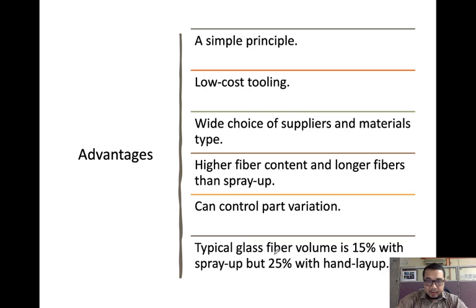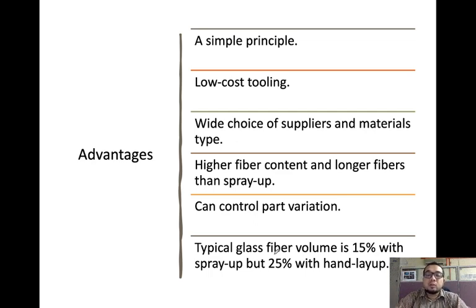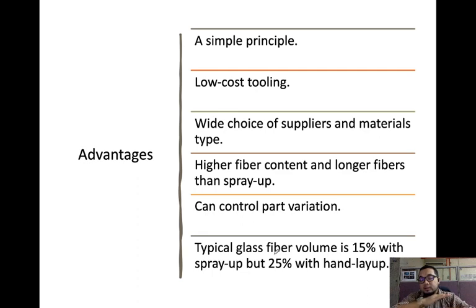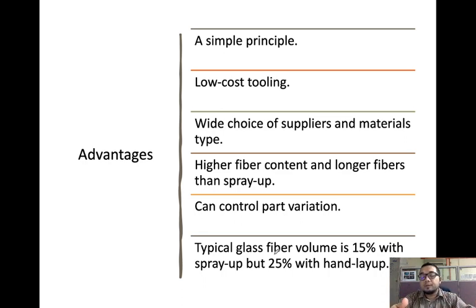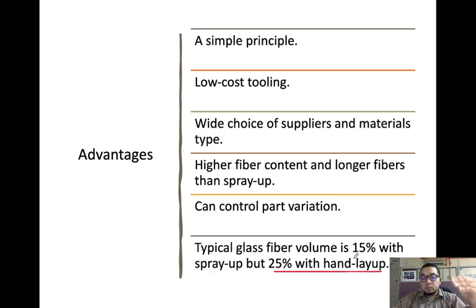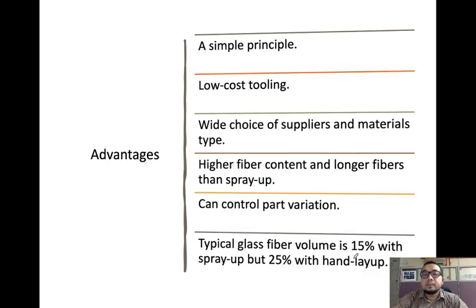Advantages of hand layup: simple principle, low cost tooling, wide choice of supplier and material types, high fiber content, and longer fiber than spray-up. You can control part variation — for example, choosing how many layers of fiber matte to place before pouring epoxy. Typical glass fiber volume is 20–25% with hand layup, compared to 50% with spray-up, meaning hand layup can accommodate more fiber.